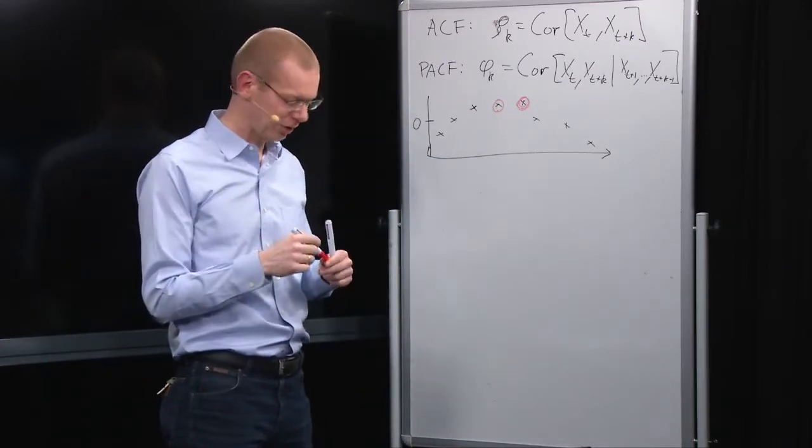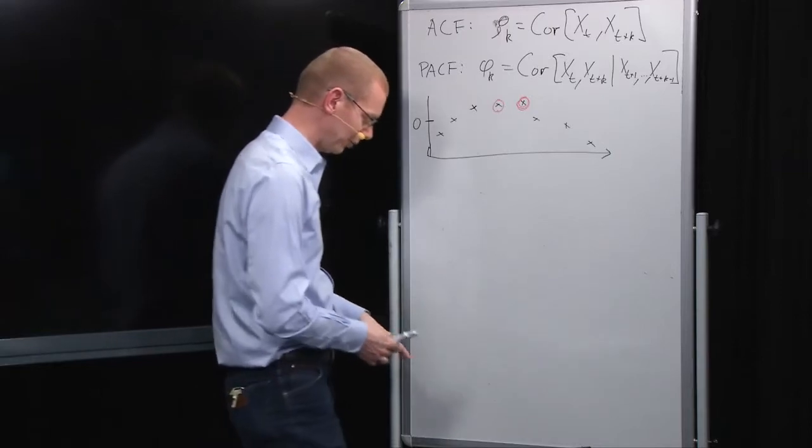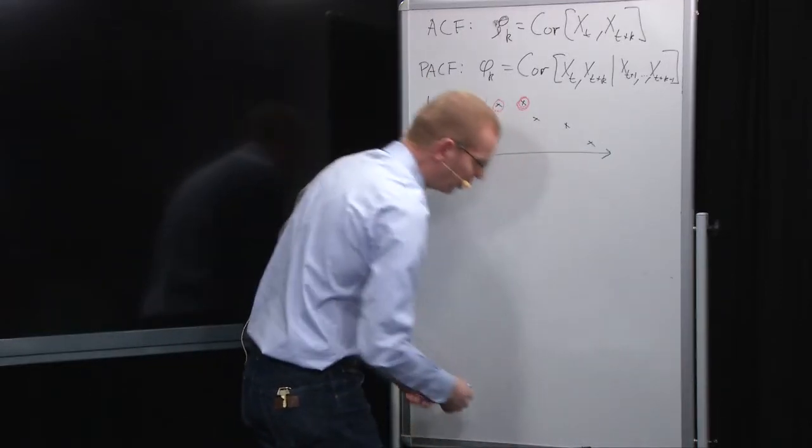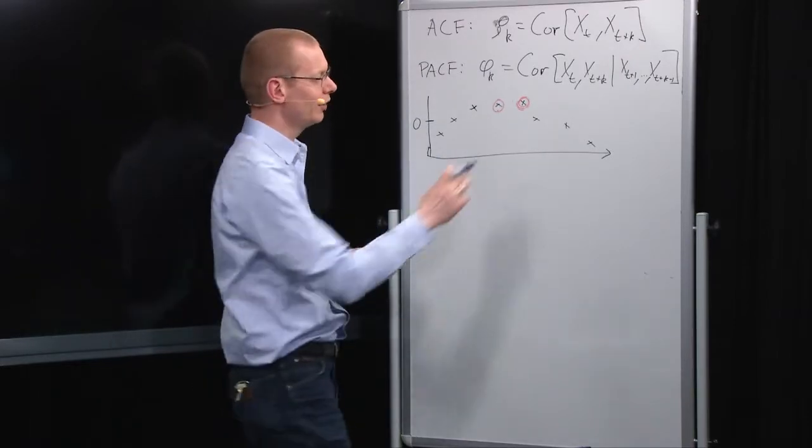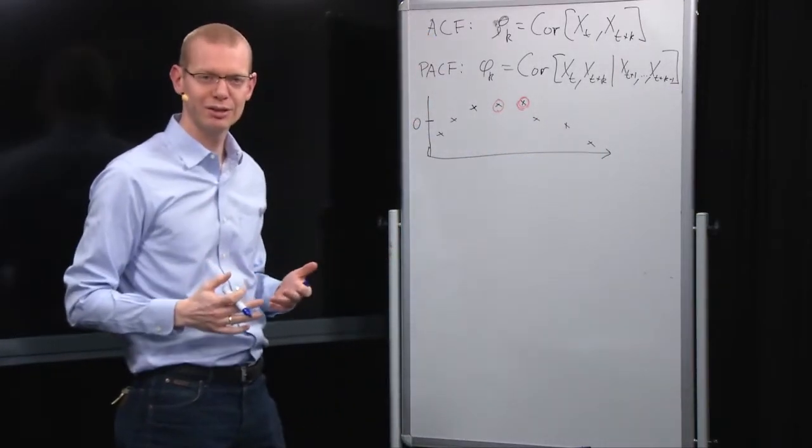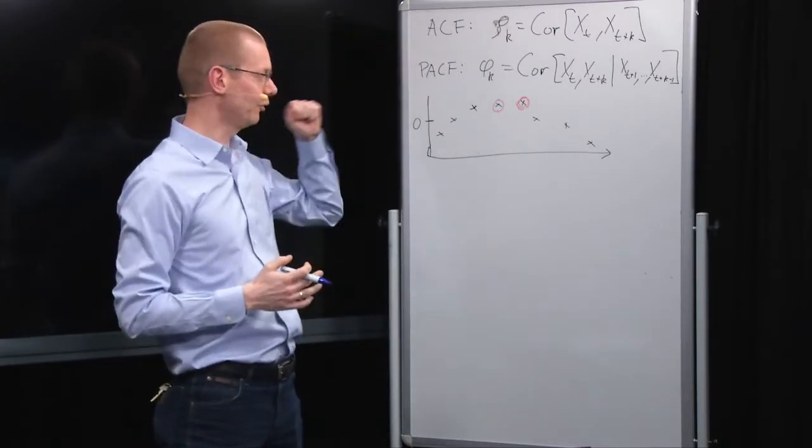That's basically what the correlation is saying. Now if we go for the partial autocorrelation function for lag 1, well there are no observations in between, so the lag 1 partial autocorrelation is the same as the autocorrelation.